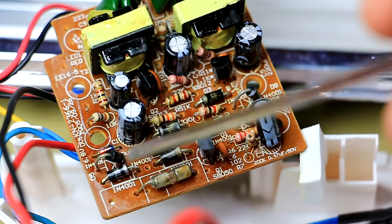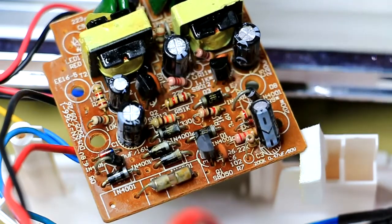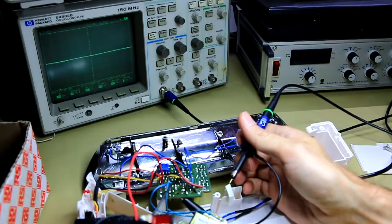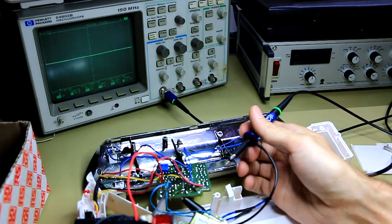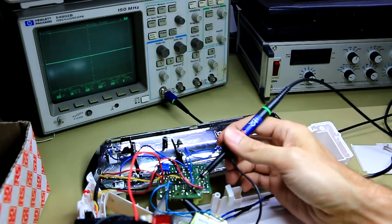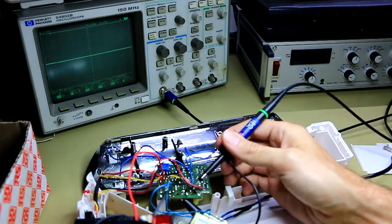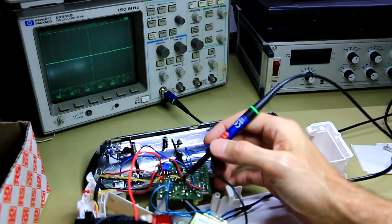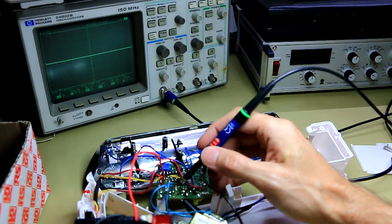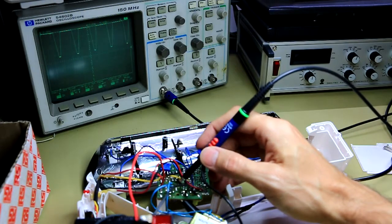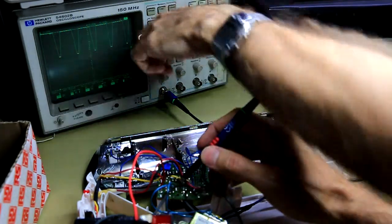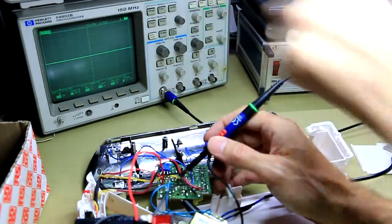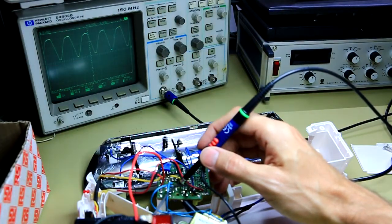And then I suspect it might have something to do with this smoothing capacitor. Okay, I've clipped the ground clip of the oscilloscope to the ground plane here. You can see the black wire coming from the battery, so let's probe around and see what we can measure here. Over there, that's what we saw on the charging while it was charging the battery.